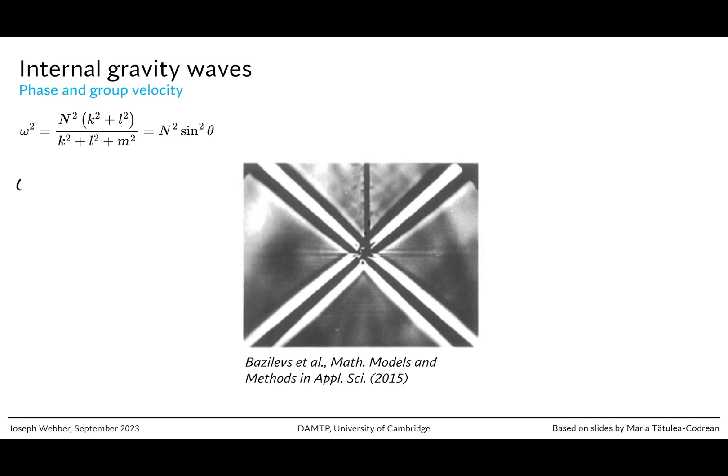The phase velocity we'll call cp, which is a vector, and it's just going to be omega over k in the direction k hat, where k here is just the modulus of the wave vector. So this is the speed at which you see the crests of the wave propagating.